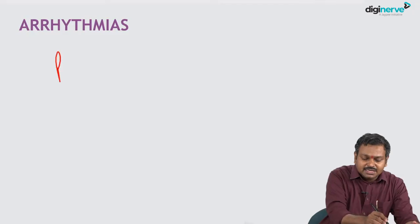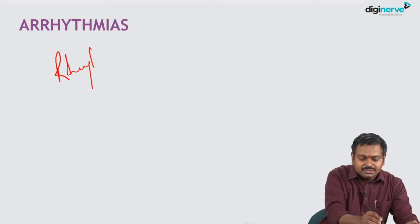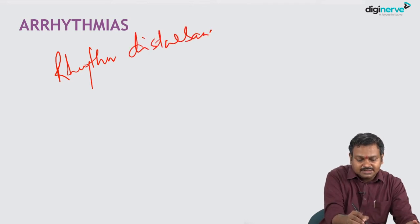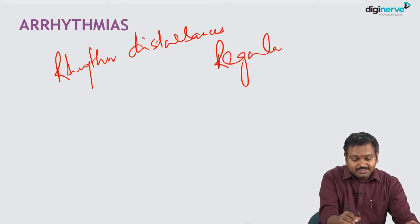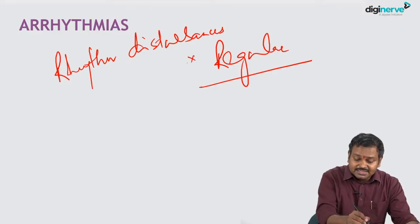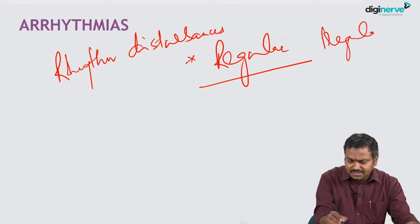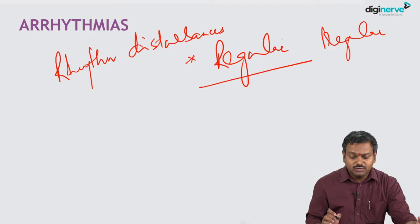Coming on to arrhythmias — what do we mean by arrhythmias? Arrhythmias are rhythm disturbances, disturbances in the rhythm of the heart. The normal heart rate is regular, and whenever it becomes irregular we generally have an arrhythmia. But remember, arrhythmias can also occur when the rhythm remains regular. We'll be discussing both in subsequent sessions.